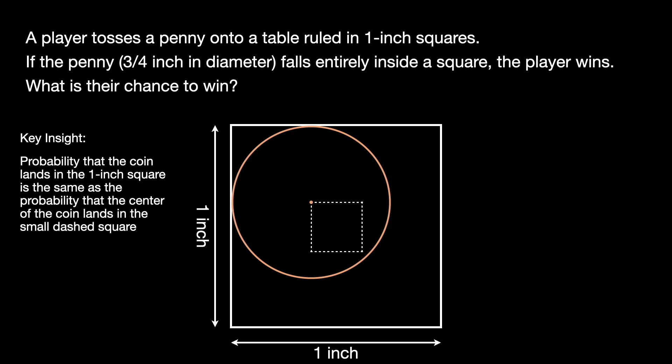We can now make a second key insight. We realize that the probability that the center of the coin lands in the small dashed square is simply equal to the ratio of the small dashed square's area to the larger 1 inch square's area. This is because we initially assumed that the coin had a uniform probability of landing anywhere within our search space and thus the probability density is constant throughout our search space. This allows us to drastically simplify our problem.